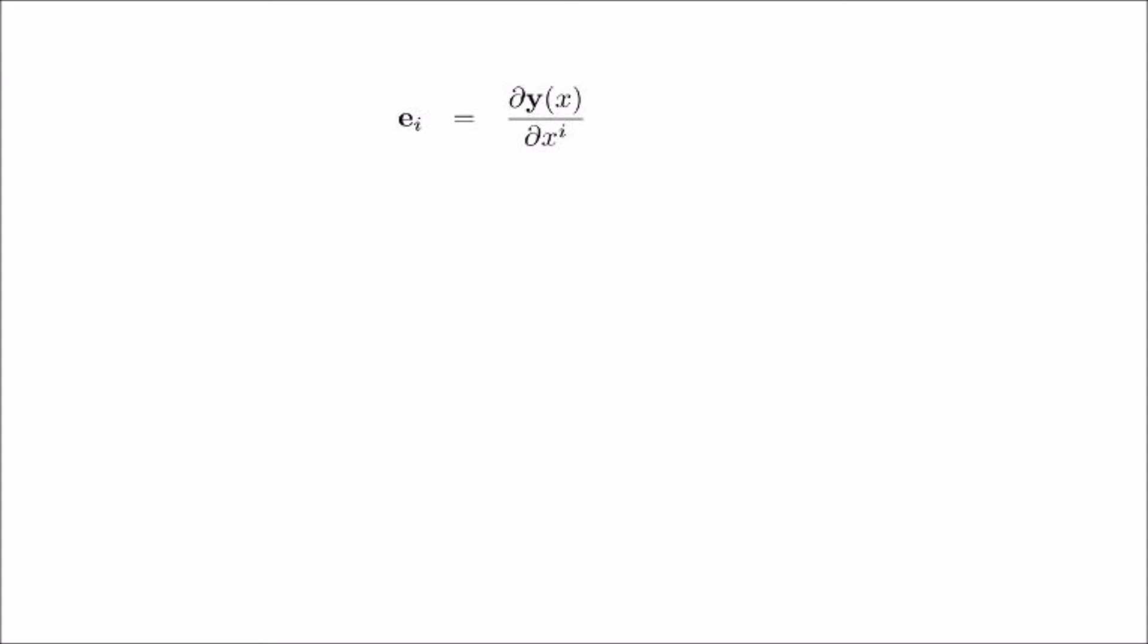Getting back to the basis. If in the coordinate system x, the basis e i is dy x over dx i, then in the x' coordinate system, it is dy prime of x' over dx i prime. Or, equivalently, dy of x as a function of x' over dx i prime. By virtue of partial differentiation, this is equal to dy of x over dx k times dx k over dx i prime, where k is summed over.